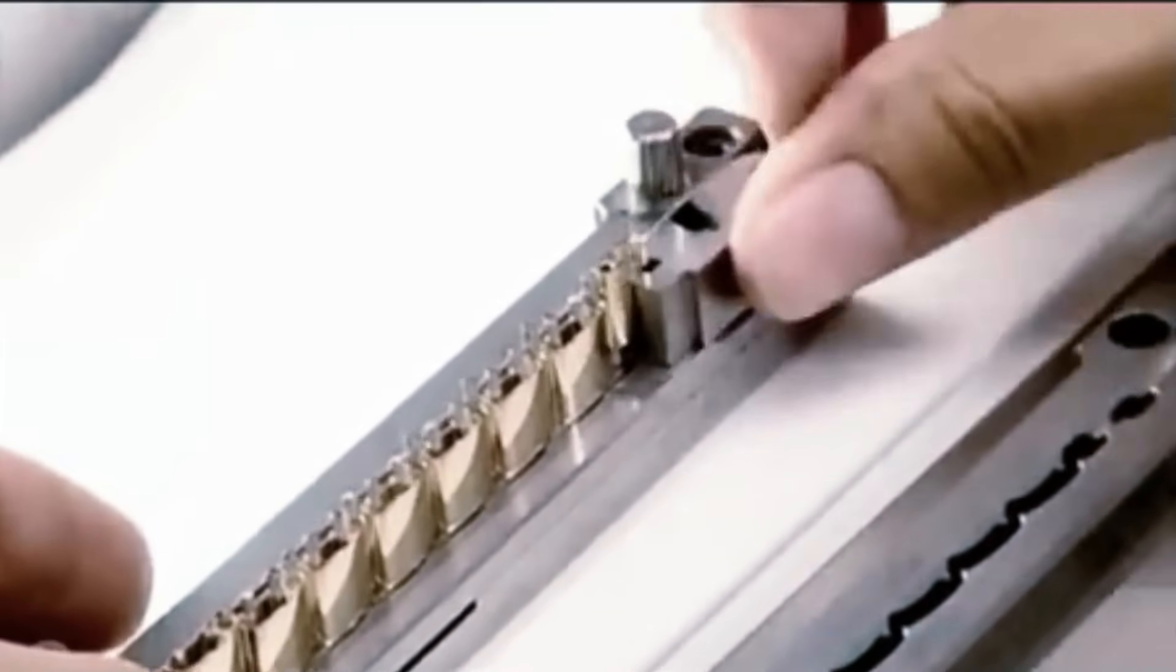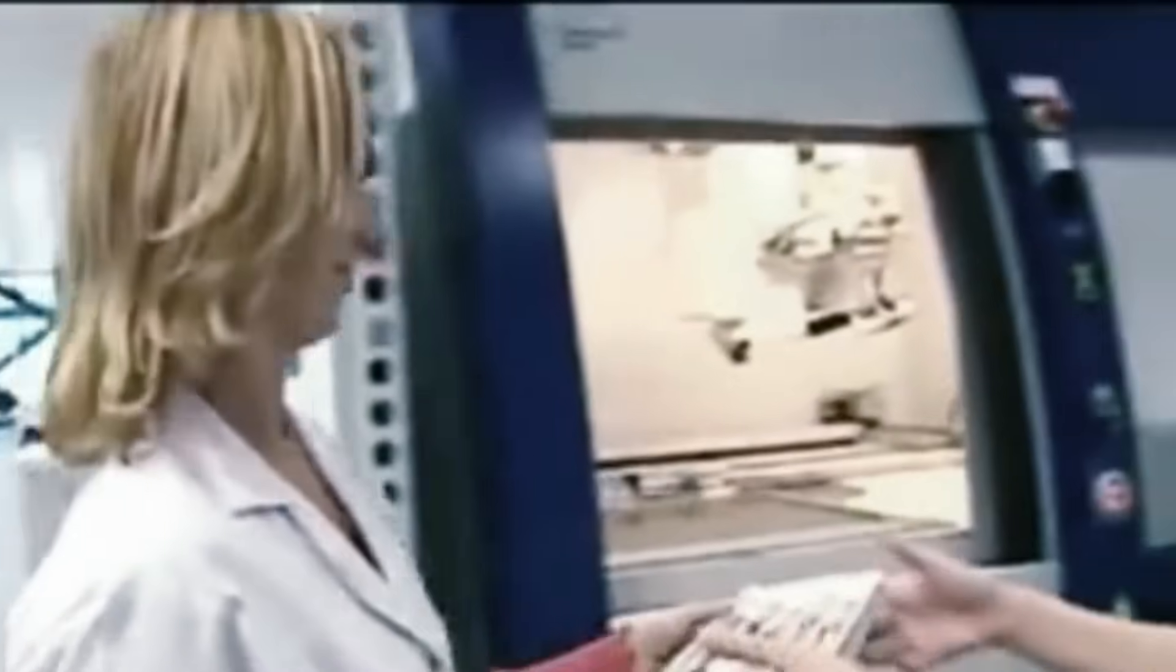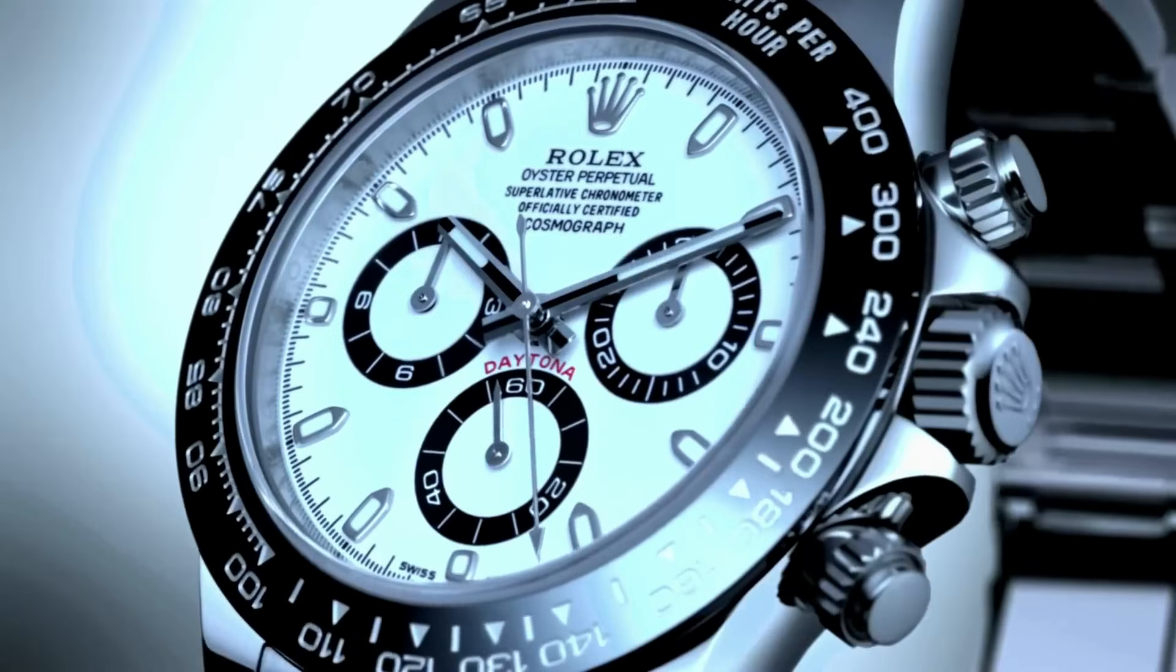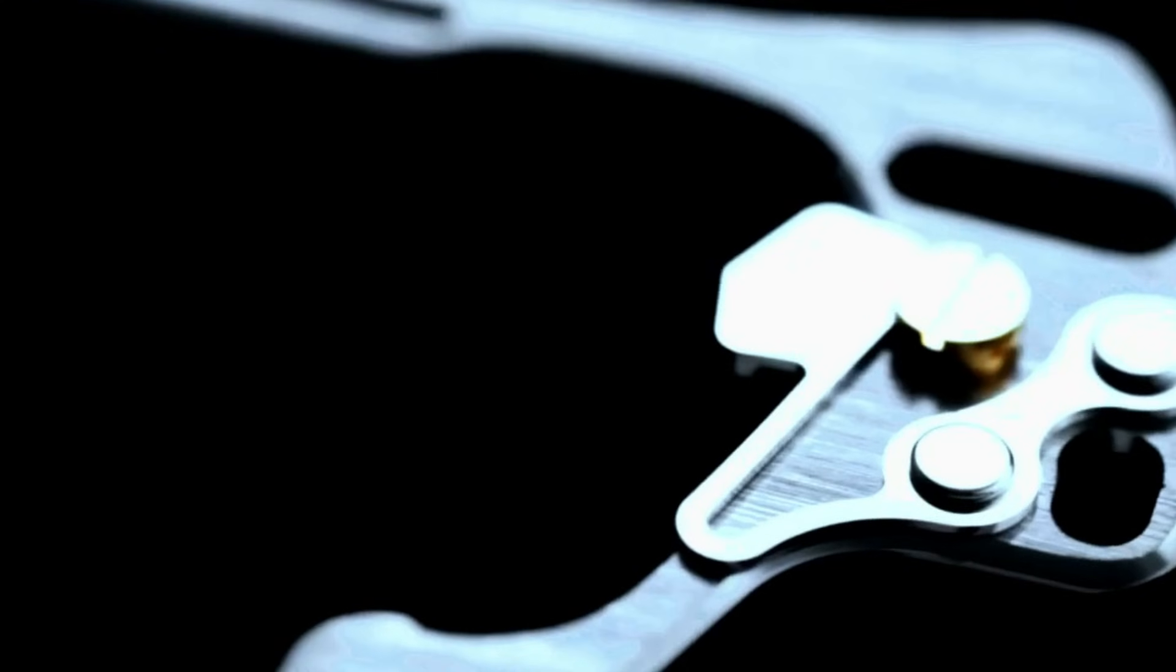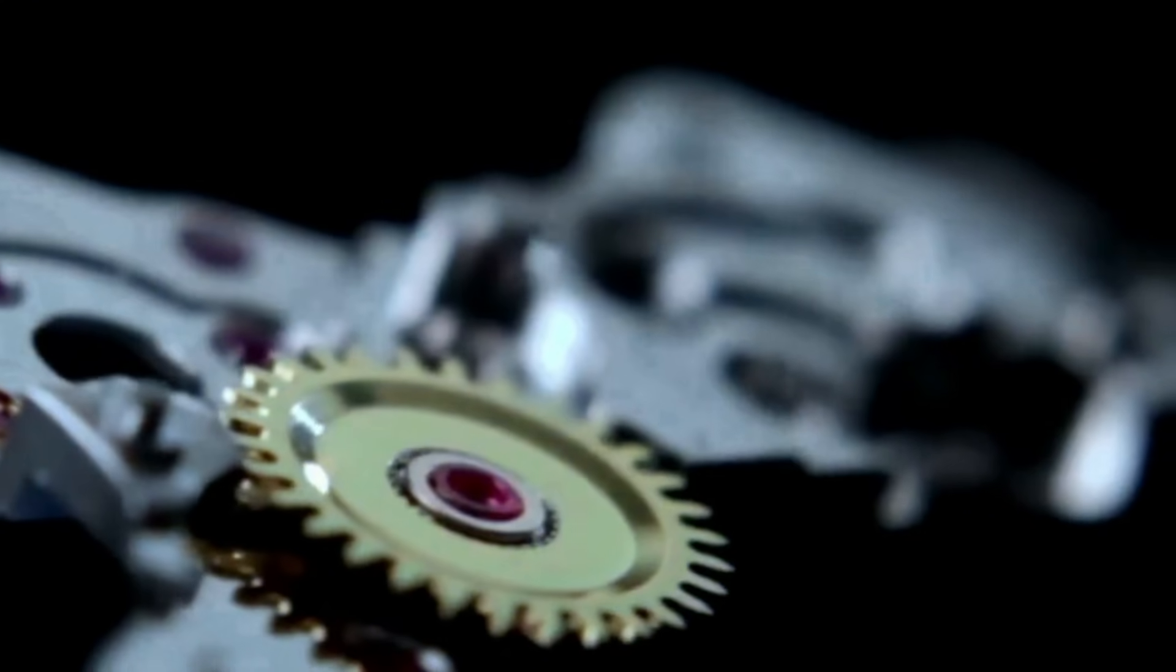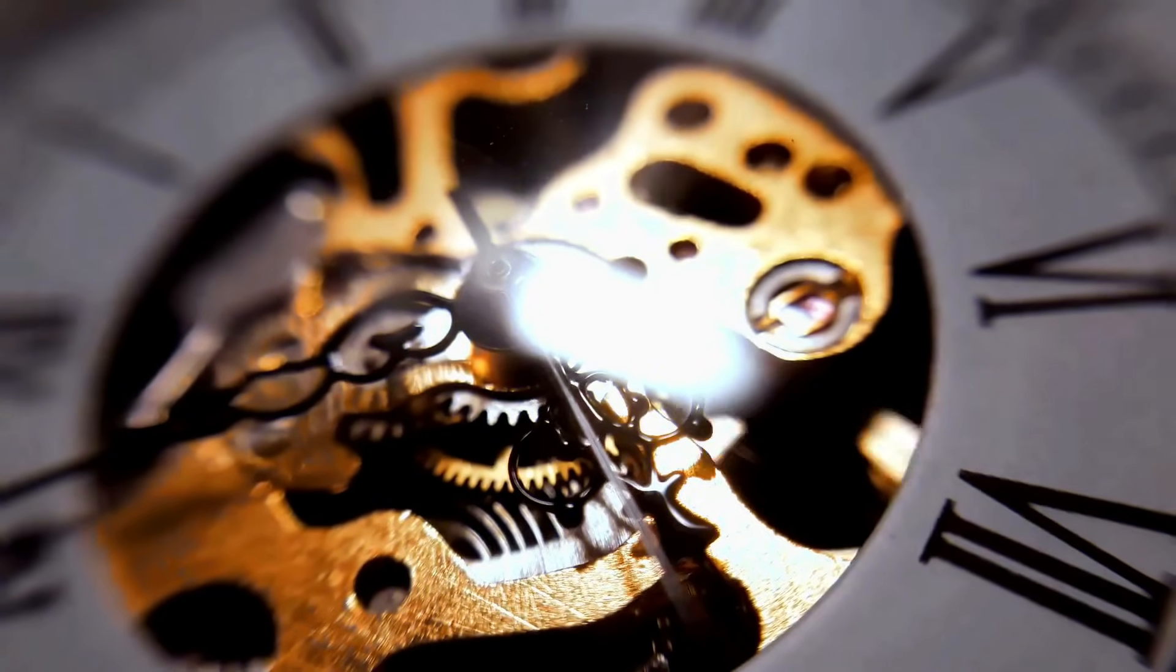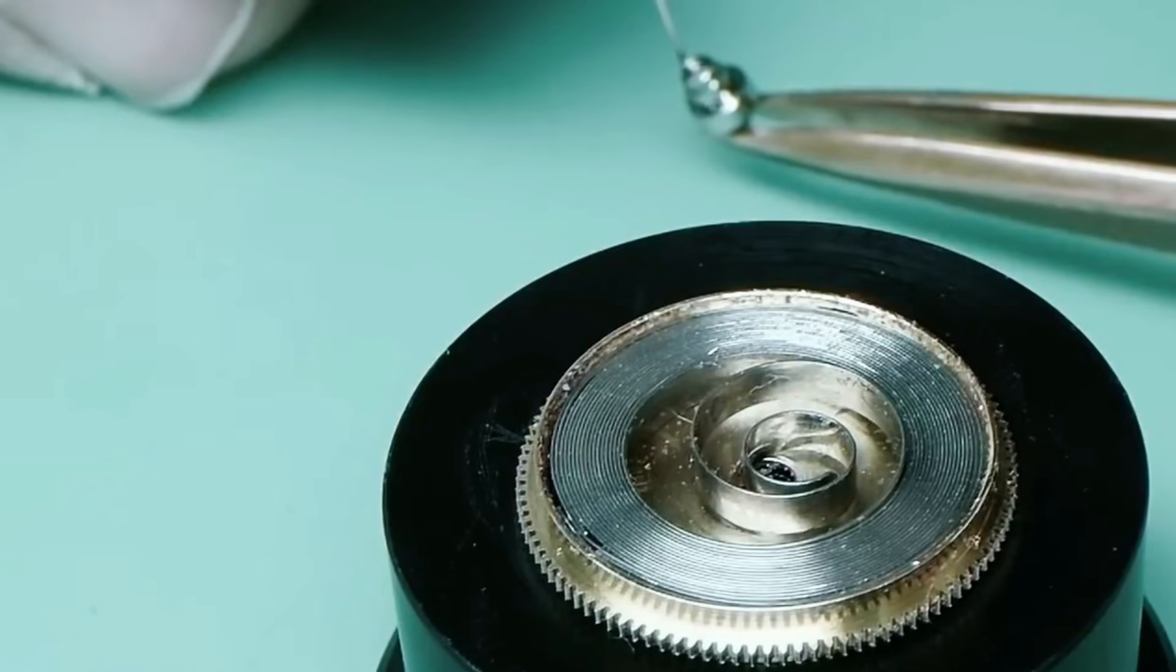From raw metal to precision timekeeping, the Rolex journey continues. At the heart of every Rolex watch is its movement, the engine that powers this timekeeping marvel. It's a complex system of gears, springs, and levers working together to track time. Building this mechanical masterpiece requires incredible precision. Tiny fractions of a millimeter can make or break a watch's accuracy.